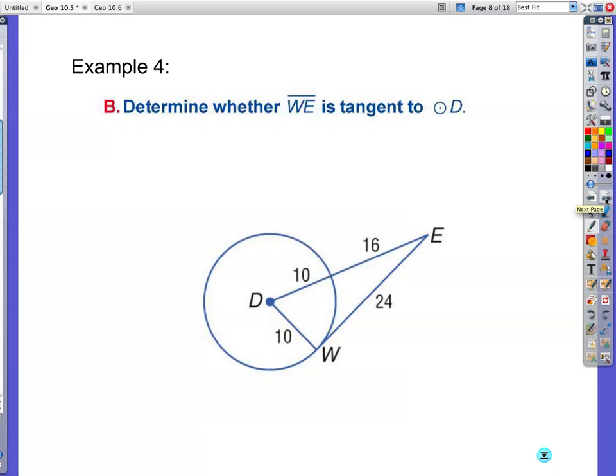So I'm going to check my work. 81 plus 49, does that equal 196? If I add it up here, I get 130. Isn't that what 81 plus 49 is? Does that equal 196? And I'm going to put down a big no. So it is not going to be tangent. Example 4. Once again, kind of the same idea. Determine whether segment WE is tangent. So you're going to check to see if it's a right angle.